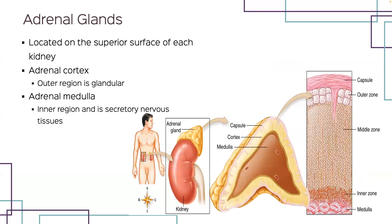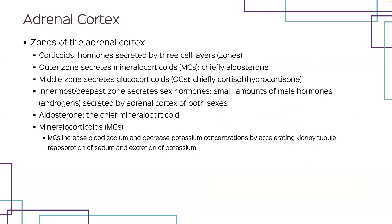The adrenal glands curve over the superior surface of each kidney. From the surface, an adrenal gland appears to be only one organ, but it is actually two separate endocrine glands: the adrenal cortex and the adrenal medulla. The adrenal cortex is the outer part and is made up of glandular epithelium. The adrenal medulla is the inner part and is made up of secretory nervous tissue, much like the secretory nervous tissue of the posterior pituitary. Each part releases a different set of hormones. There are three different zones or layers of cells that make up the adrenal cortex. The outer zone secretes hormones called mineralocorticoids, or MCs, the main one being aldosterone.